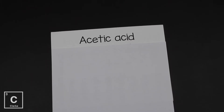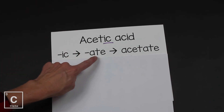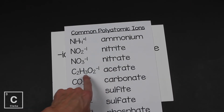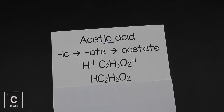Let's write the formula for acetic acid. The first thing to notice is that this acid does not have a prefix and it ends in -ic. Since it ends in -ic, that tells us it used to end in -ate. So this is acetate. Acids begin with H, and hydrogen is in group one, so it's a plus one. Acetate is a negative one. Plus one minus one equals zero, and just like ionic compounds, acids also have to have a net charge of zero. That means hydrogen and acetate come together in a one-to-one ratio.